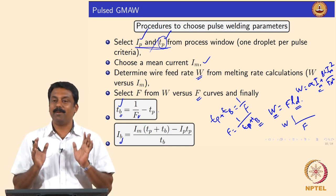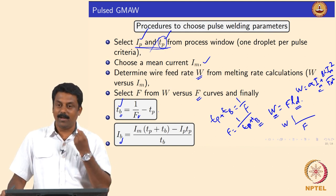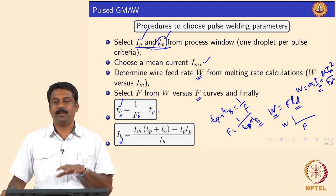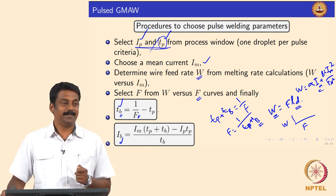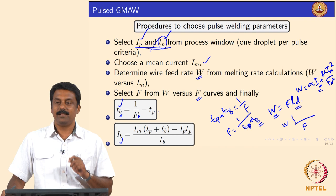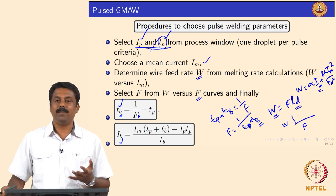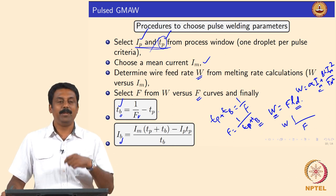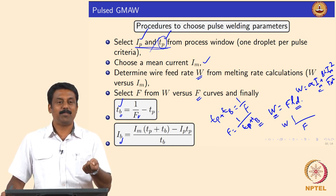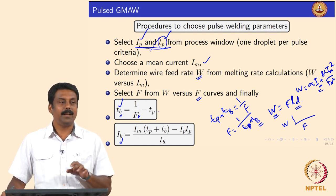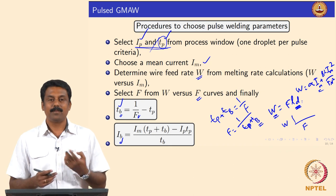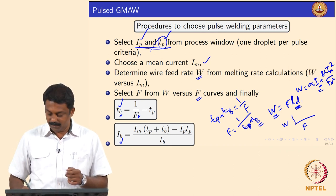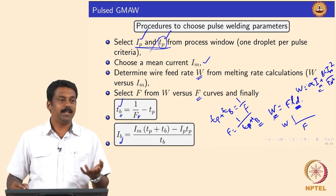All these calculations are done in the power source nowadays. When you buy the power source, the company also sells the welding parameters database — and you pay for that. Suppose you want to weld Inconel 625 using pulse GMAW — you contact the power source manufacturer, they give you a program to load into the power source containing all the calculations. The diameter is critical because it determines LD.